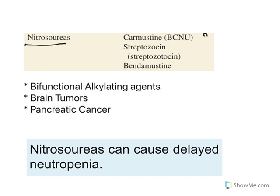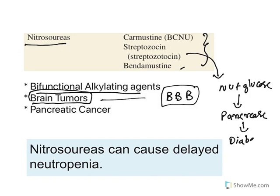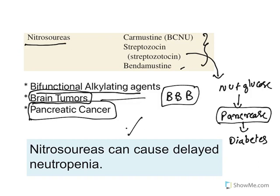The next class is nitrosoureas: carmustine, streptozotocin, and bendamustine. They are again bifunctional alkylating agents and can cross the blood-brain barrier, so they are used to treat brain tumors. Streptozotocin is a combination of nitrosourea plus a glucose molecule; it has selectivity towards pancreatic cells. In animals it has caused diabetes by destroying pancreatic cells and reducing insulin levels, so it can be used to treat pancreatic cancer. Nitrosoureas can also cause delayed neutropenia — a delayed reduction in neutrophil count.